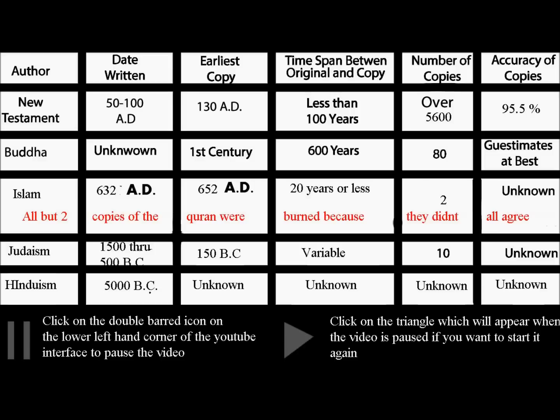I want to start off by telling you that if you look at the lower left-hand corner of the video, you'll see two double lines, and those are also on the YouTube interface on the screen, not on the video. If you click on the double lines, you can pause the video and stop and look at it yourself without hearing me. Then to start it up again, after you've clicked the two double lines, you'll see a gray triangle — click on that and the video will start again. Having said that, let's begin.